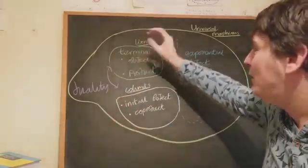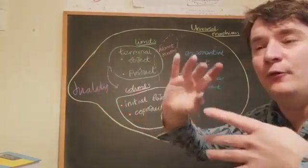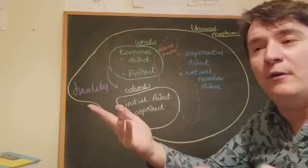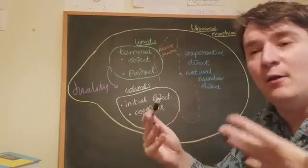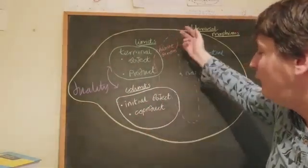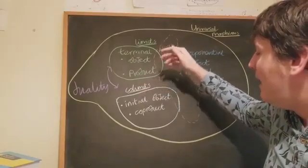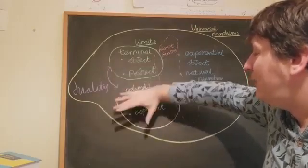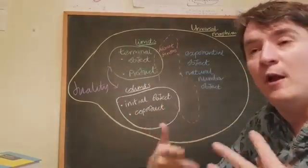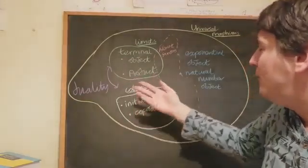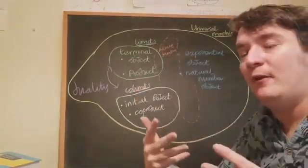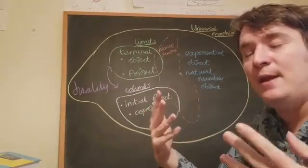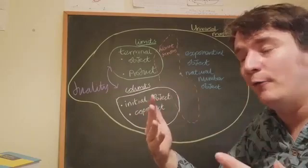So we can understand, for example, there's a limit called an equalizer, which allows us to understand what solving equations means in a general category. And there's many, many other important limits. And there's also this idea of co-limits, which we're also going to encounter. We kind of get the understanding of that for free by this notion of duality. So we're going to be understanding what limits are in the next video. And that's going to be a really sort of powerful thing.